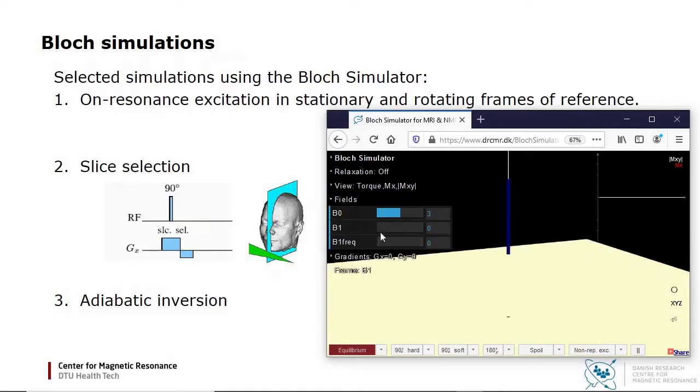Then I adjust the RF frequency far from resonance. I now turn on a weak B1 field. Since it is applied far off resonance, the effective field vector is near longitudinal initially, and the magnetization precesses around it. When I ramp up the B1 field amplitude gradually, the magnetization will therefore follow the effective field vector.